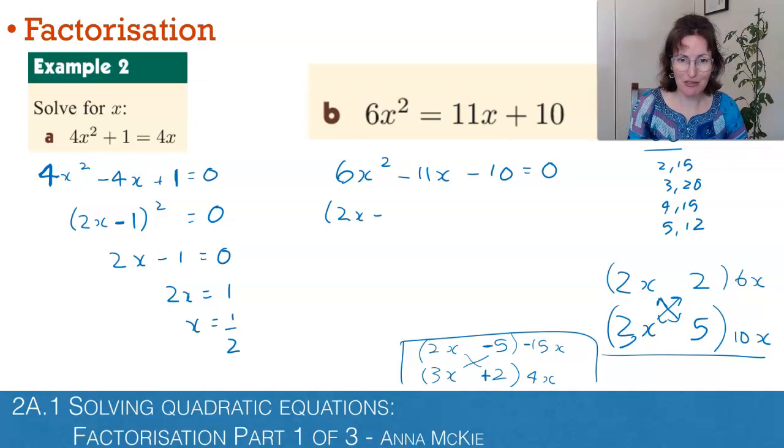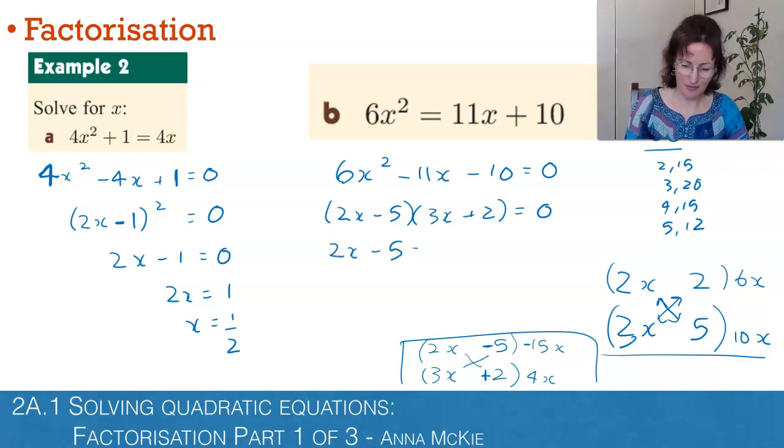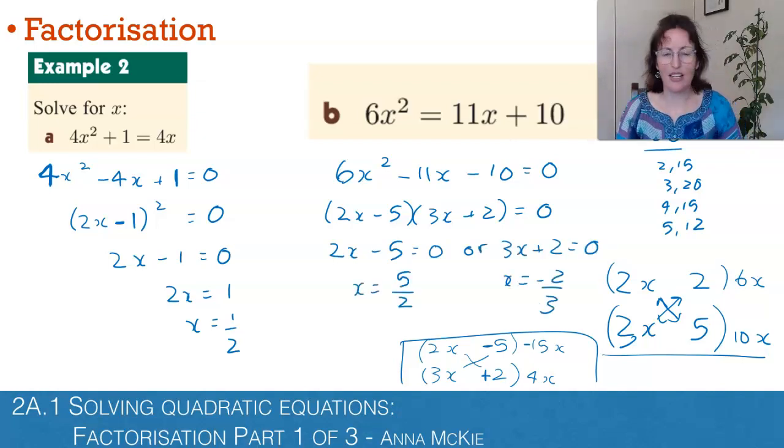It doesn't matter which order you write them in. If you're not sure, you could always expand out and check. Then we use the null factor law, putting each bracket equal to zero and solving for x. So there are two answers for this. These are our roots or our solutions: x equals 5 on 2 or negative 2 on 3.